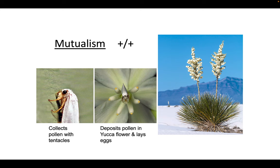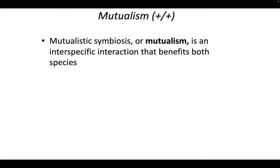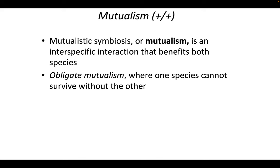In mutualisms, we often call these a mutualistic symbiosis, where symbiosis means that two species are interacting in a close relationship. But mutualism is probably the better term, because there are other types of symbiosis and we don't want to get confused when talking about symbiosis.